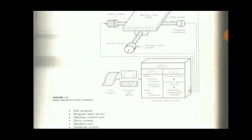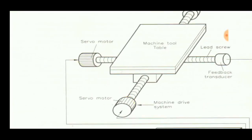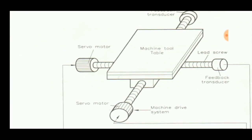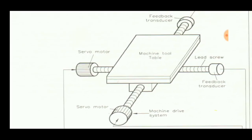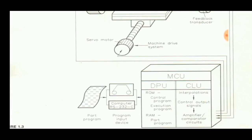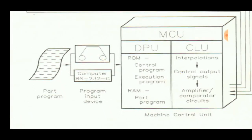A CNC system consists of a machine tool table with two or more screws. A servo motor controls the lead screw for moving the machine tool table front and back. A feedback transducer is present on the lead screw to provide feedback of the machine tool table and servo motor position. Two servo motors and feedback transducers are present, and the machine tool table sits on top. It consists of a Machine Control Unit, or MCU, which contains a DPU and CLU. The DPU consists of ROM to control and execute the program, and RAM where the part program is stored temporarily.